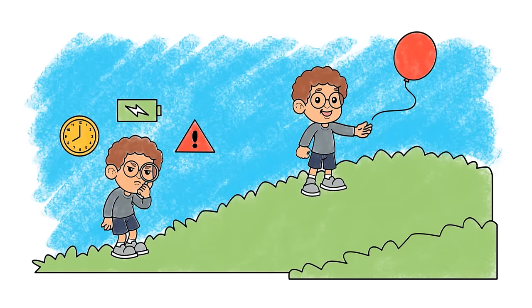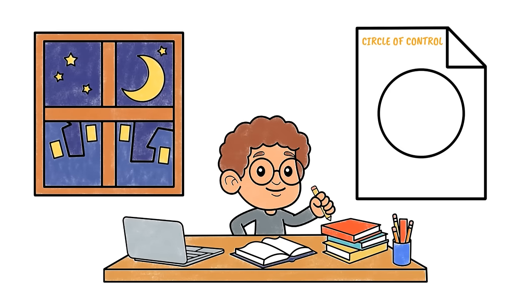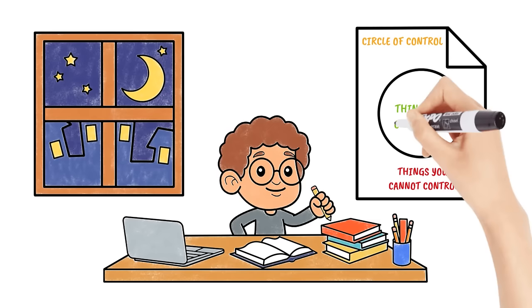A simple way to start is by drawing a circle on a piece of paper. On the outside of the circle, write down some of the things in your life that you cannot control. And in the middle of the circle, write down some of the things in your life that you can control.